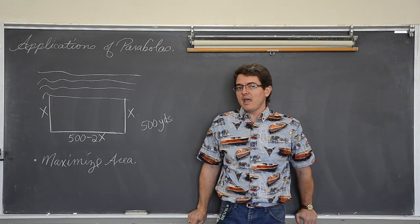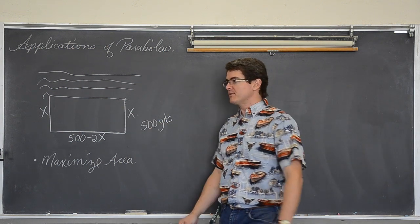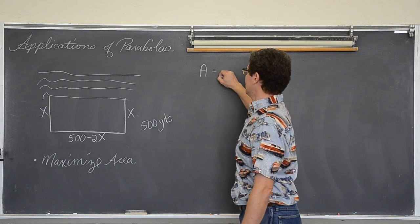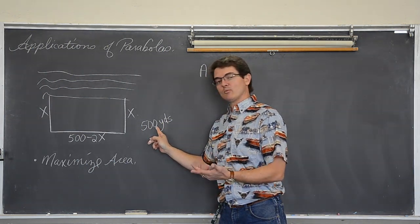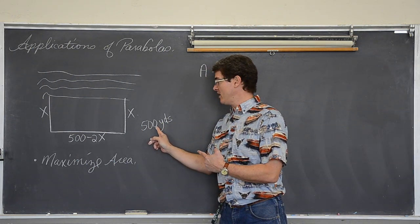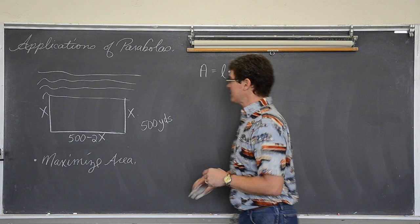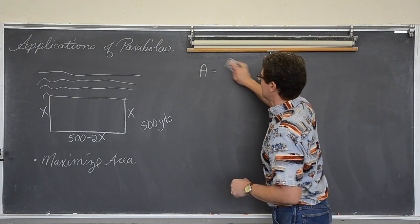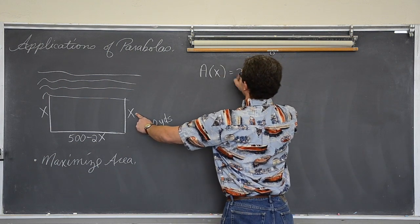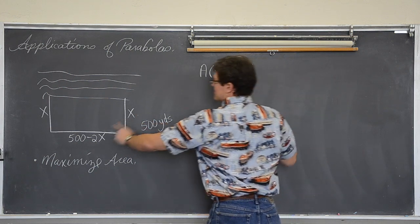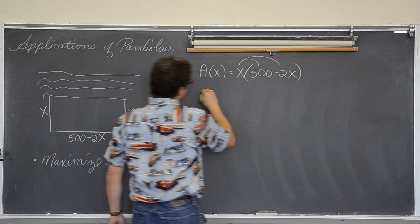How much area can we enclose with this rectangle? Area is length times width. We have a rectangle with a perimeter of 500, so we know something about the length and width. We are going to write the area in terms of x: that is x times (500 - 2x). This forms a parabola — 500x - 2x². And we can use that parabola to find the maximum area. We have a downward-opening parabola.